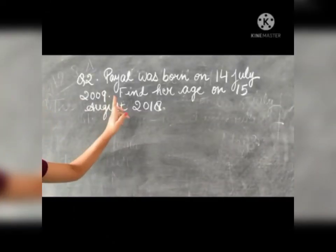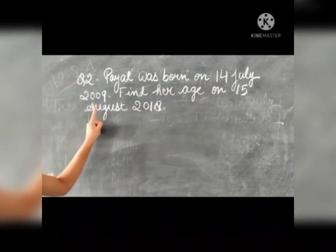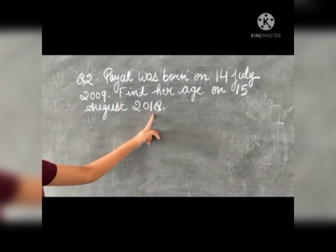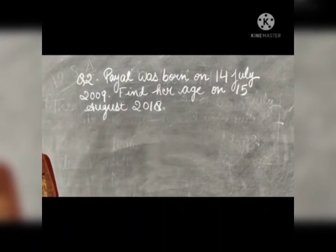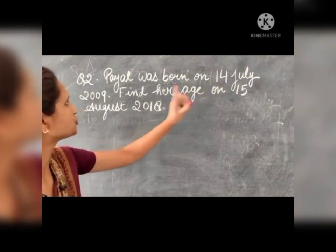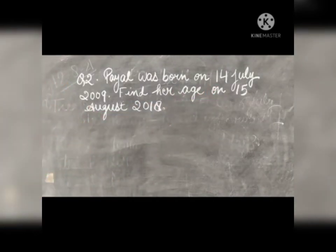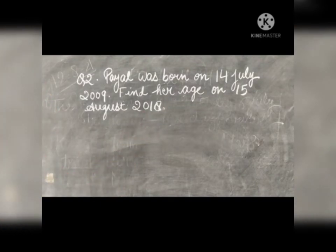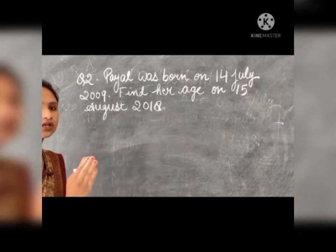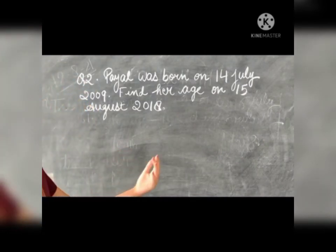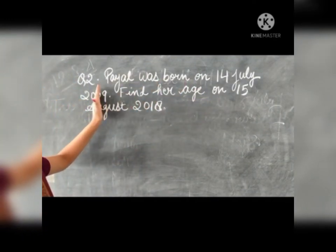Question number 2: Payal was born on 14 July 2009. Find her age on 15 August 2018. Here you have to find out the age. Whenever we have to find the duration of age, we have to subtract the bigger number from the smaller number — that is, always subtract the smaller from the bigger number.